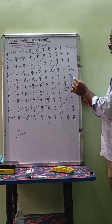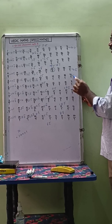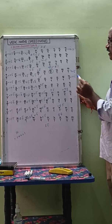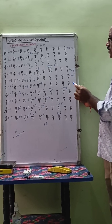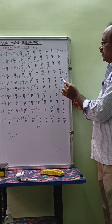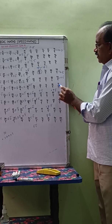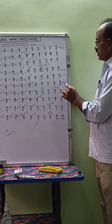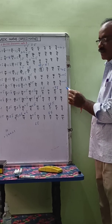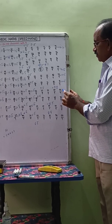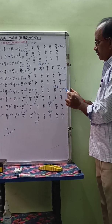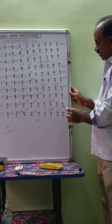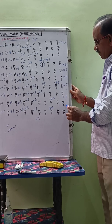95 by 9 equals 10.5 bar. 96 by 9 equals 10.6 bar. 97 by 9 equals 10.7 bar. 98 by 9 equals 10.8 bar. That is it — 99 by 9 equals 11.